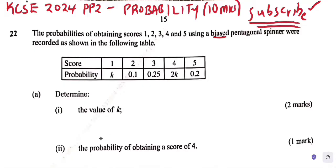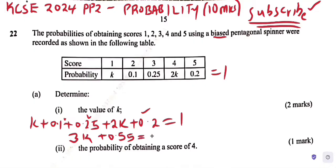Question A: determine the value of k. So all probabilities must add to 1. So k plus 0.1 plus 0.25 plus 2k plus 0.2 equals 1. Collecting like terms k plus 2k equals 3k, and 0.1 plus 0.25 plus 0.2 equals 0.55, so we have 3k plus 0.55 equals 1.